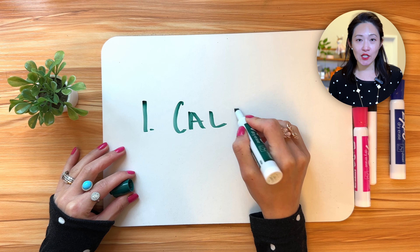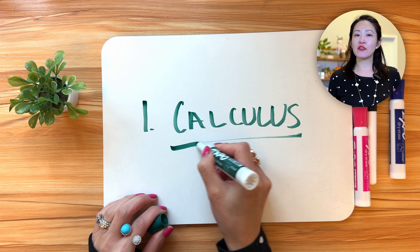We're going to start with calculus. Think of it as understanding how things change — that's it. When you're training AI, you want it to get better over time, and calculus helps us figure out exactly how to make those improvements.